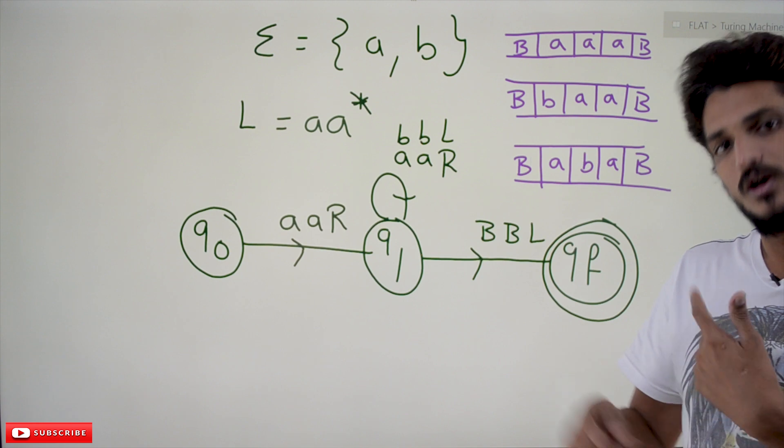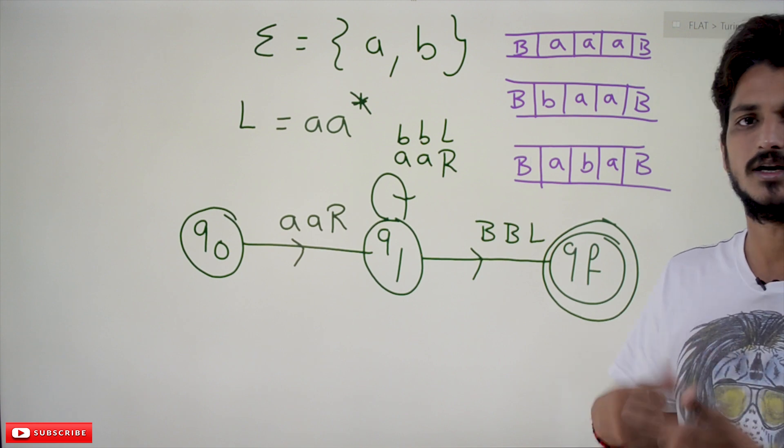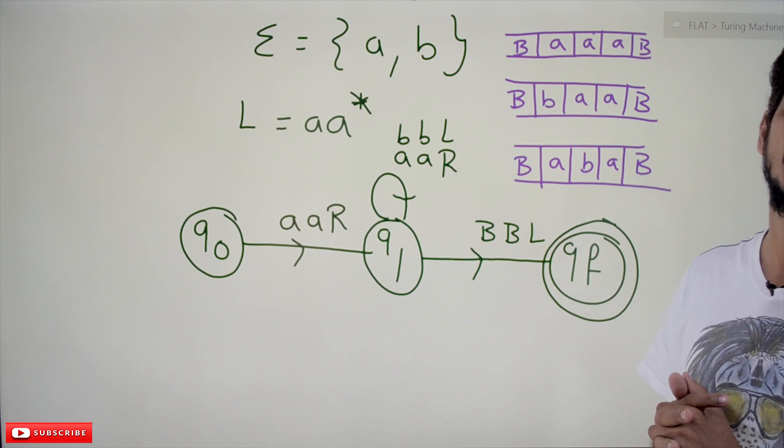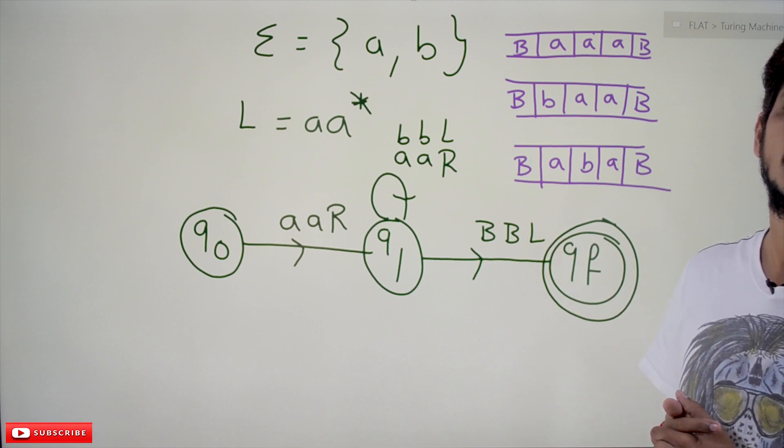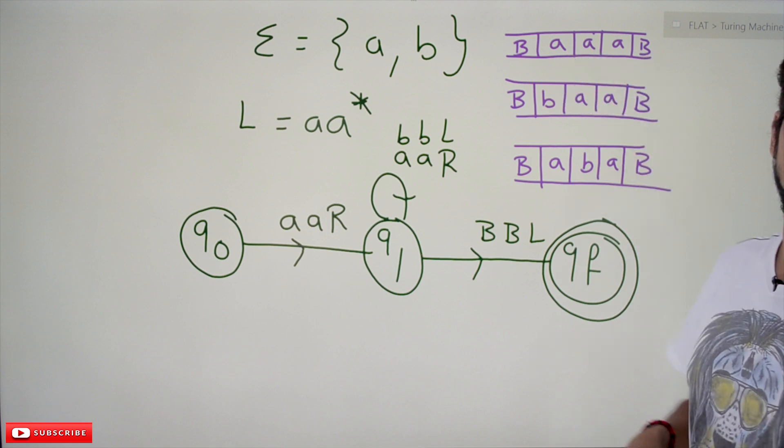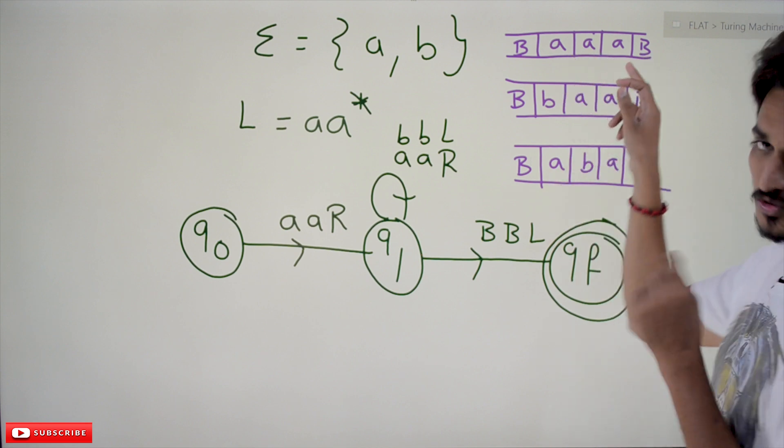See what happens here. Let's try to understand: for yes inputs, means if the string has to be accepted, for yes inputs this Turing machine is going to halt. For no inputs, some of the no inputs it is going to reject.